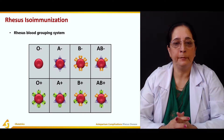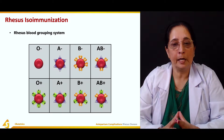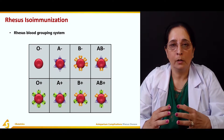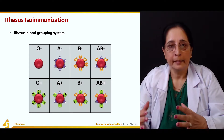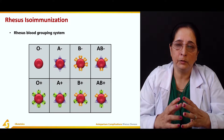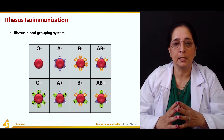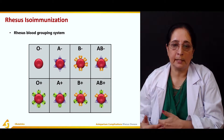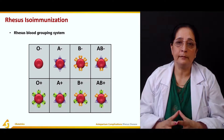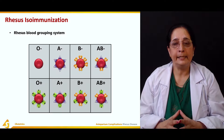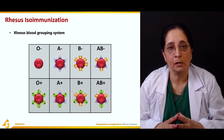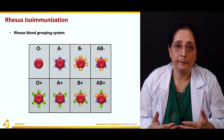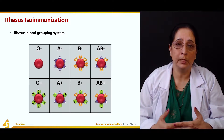The rhesus blood grouping system refers to blood groups A, B, AB, and O. These are further classified as positive or negative — for example, A positive, A negative, O positive, O negative, AB positive, and AB negative. This positive and negative classification is determined by the Rh factor present on the wall of the red blood cells, which gives the positivity or negativity to the blood groups.